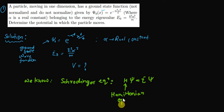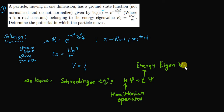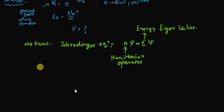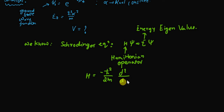H is the Hamiltonian operator and E is the corresponding energy eigenvalue. The Hamiltonian operator is -ℏ²/2m · d²/dx² + V, because we are dealing with the 1D case.